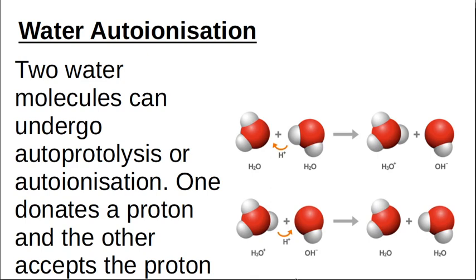If you've got two water molecules, they can turn into a hydronium ion and a hydroxide ion. And in the moment this hydronium ion and this hydroxide ion are in water, these two can talk to each other and go back to being two water molecules. So this is an equilibrium reaction — forward reaction, backward reaction. Water and water goes to hydronium ion and hydroxide ion, and hydronium ion and hydroxide ion go back to water and water.